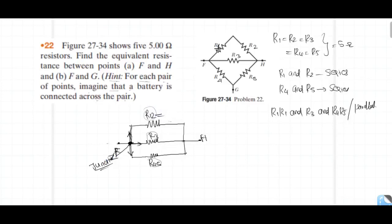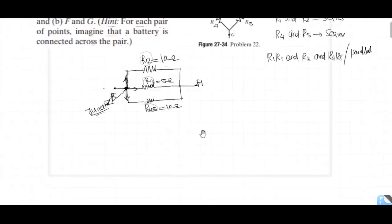For series combination, R1 to E is equal to R1 plus R2, that is 10 ohm. R3 is 5 ohm. R4, R5 is 10 ohm. Then simplify into E equivalent resistance.